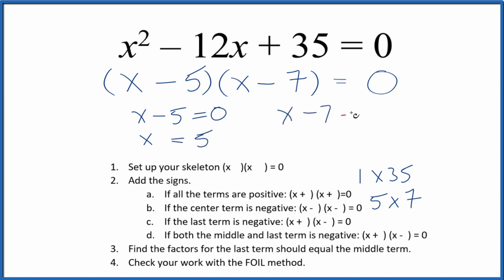x minus 7 equals 0. Add 7 to both sides. We get x equals 7. So if I put 5 in for x and do the math, this side of the equation will equal 0. Likewise, if I put 7 in for x here, I do the math, it equals 0. So we did this correctly.